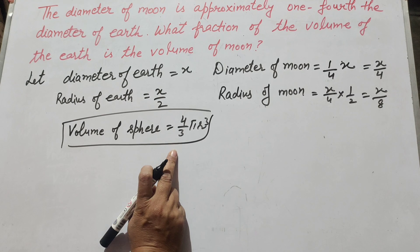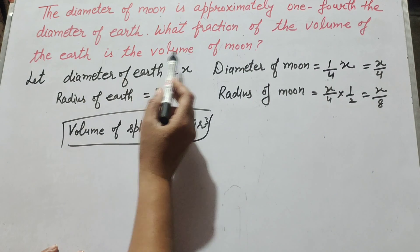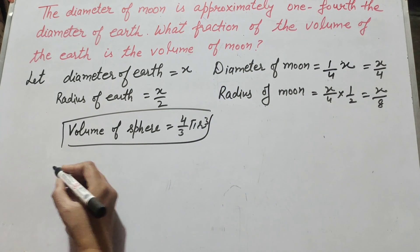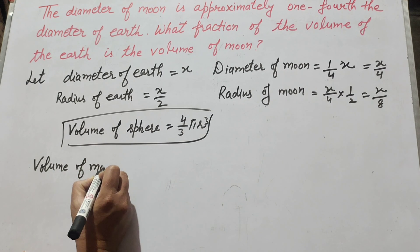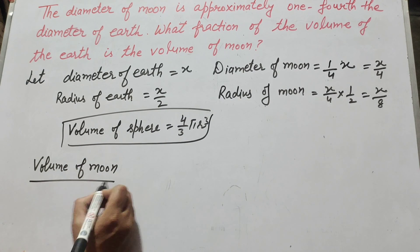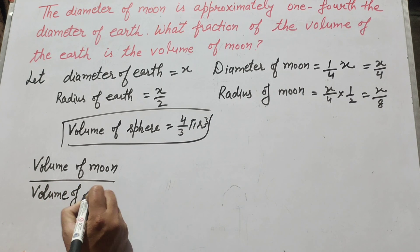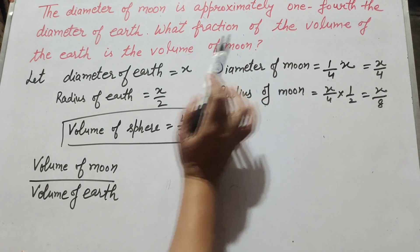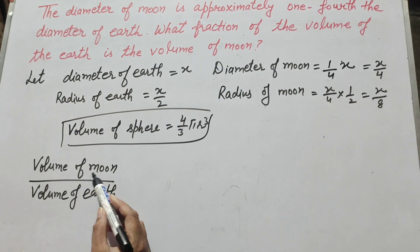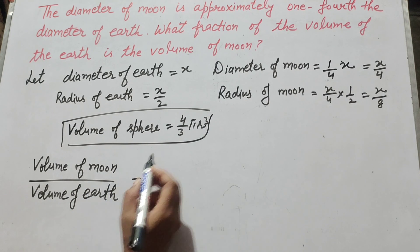In the question, we are asked: what fraction of the volume of earth is the volume of moon? So we find the fraction: volume of moon over the volume of earth.